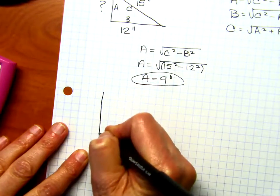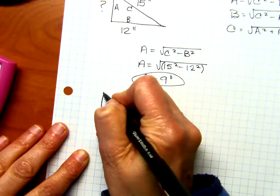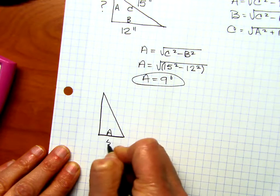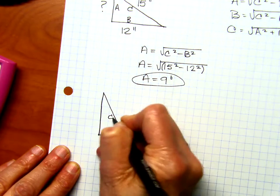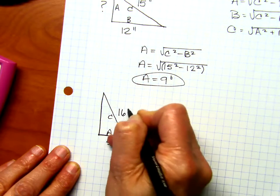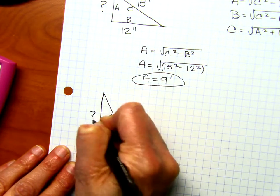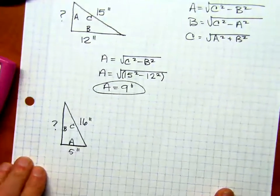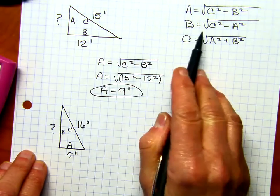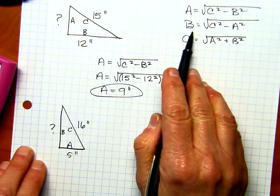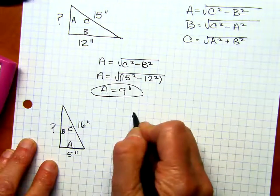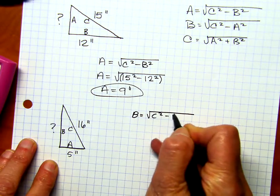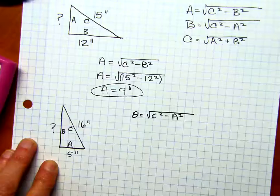Again, I like to draw a triangle to represent my work. And I'm going to say side A is 5 inches and side C is 16 inches. And we're going to solve B, side B. So if you don't have the formulas committed to memory, you can see this is what B is. So again, the first step is to write B equals the square root of C squared minus A squared.